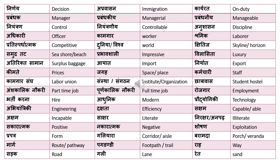The next word is 'pratisparabhatma,' which means competitive. For example, 'the world has become more competitive' is 'vishwa bohat hi pratisparabhatma ho chuka hai.' 'Duniya' or 'vishwa' both mean world. 'Shittij' means skyline or horizon.